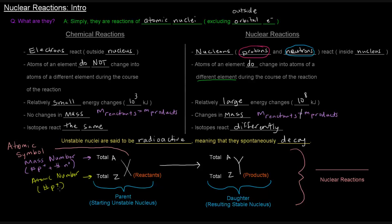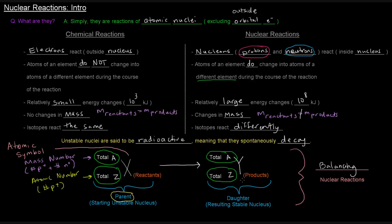When balancing nuclear reactions, we want the total A on the left side to equal the total A on the right side, and the total Z on the left side to equal the total Z on the right side. The starting unstable nucleus is called the parent, and whatever stable nucleus it gets turned into is called the daughter.